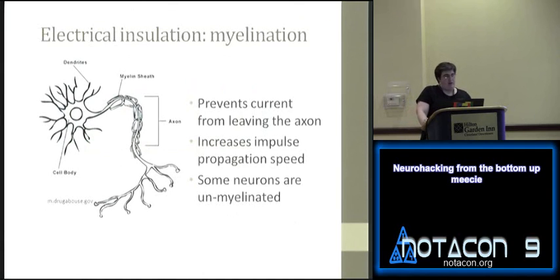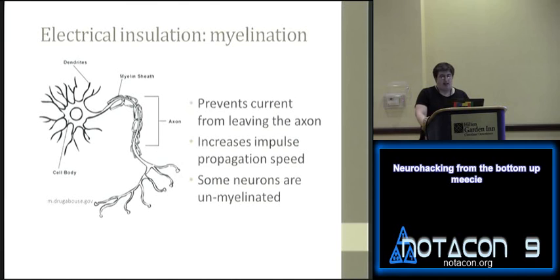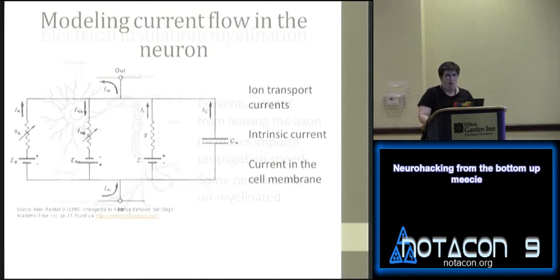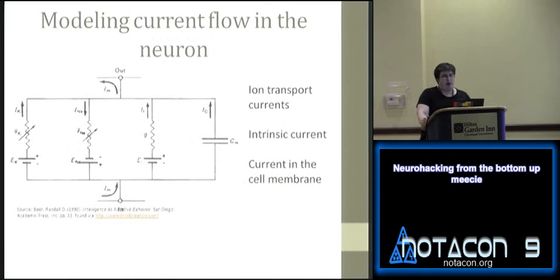Many, but not all, neurons have insulation in the form of myelin. Myelin prevents current from leaving the axon — the long-distance portion — which does more than simple insulation: it increases neural propagation speed, since signals are not limited by diffusion and basically jump from one end to the other very quickly. There are still some neurons that are unmyelinated in certain systems.